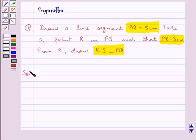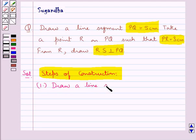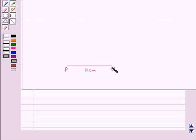Let's move on to the solution now. We will do this construction step by step. First, we draw a line segment PQ equal to 5 cm. This is the line segment PQ equal to 5 cm.